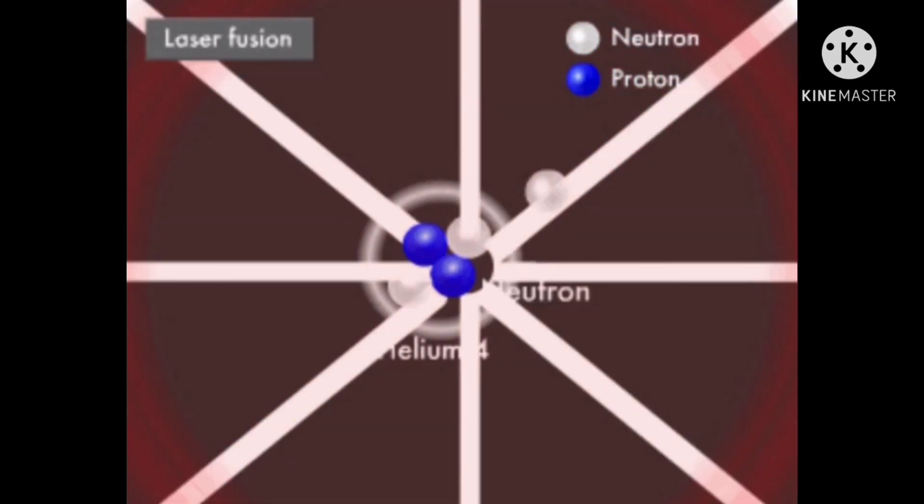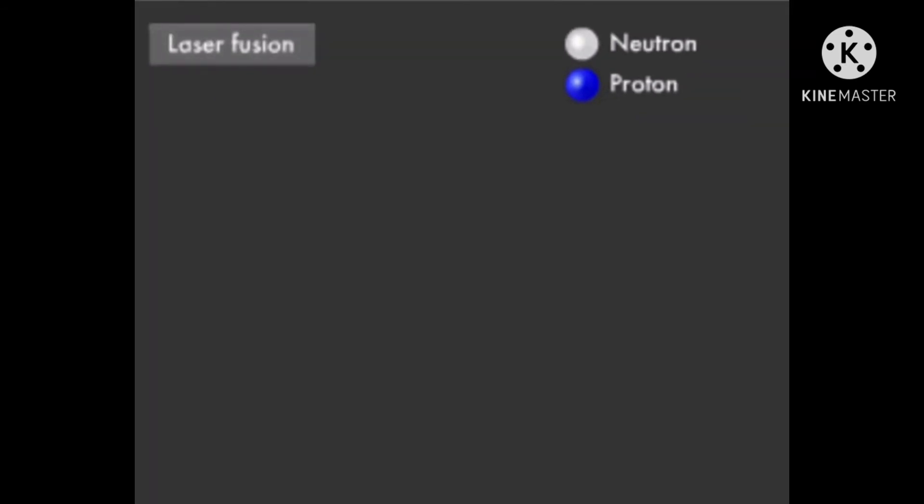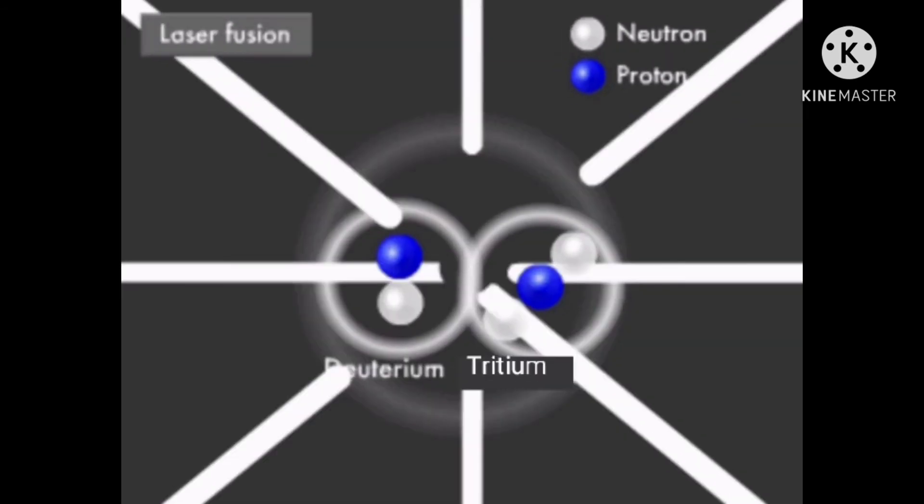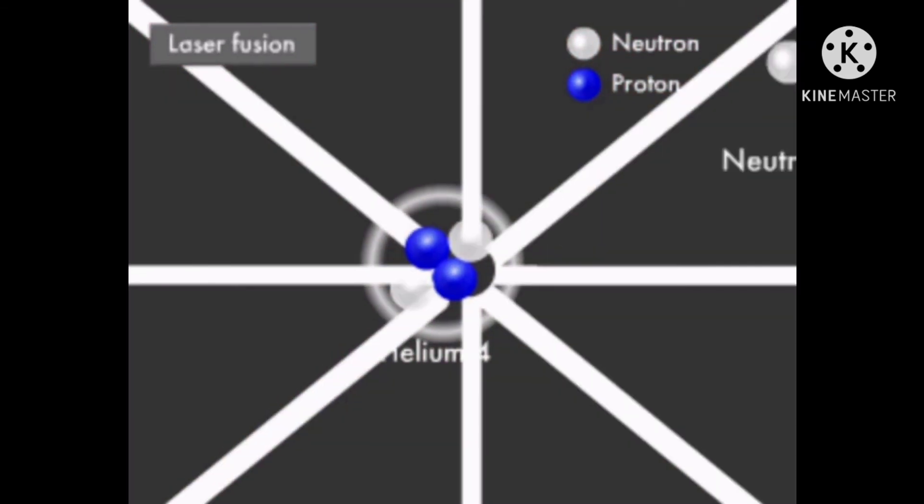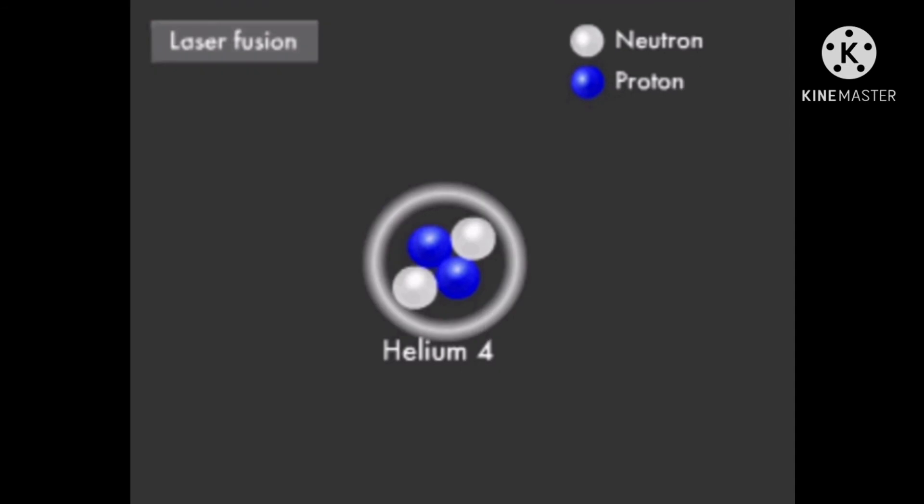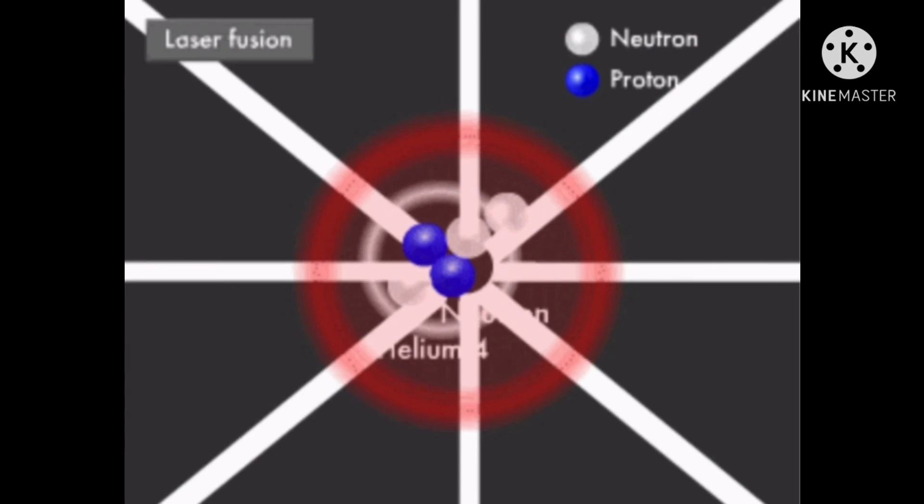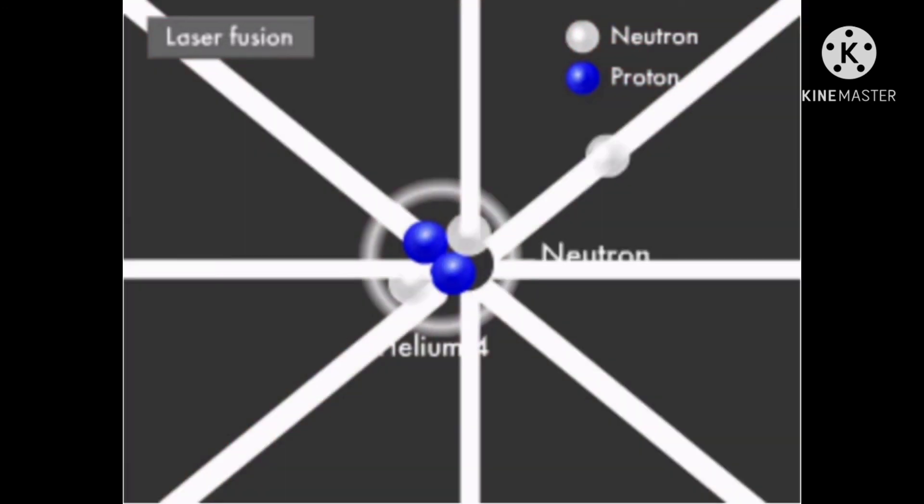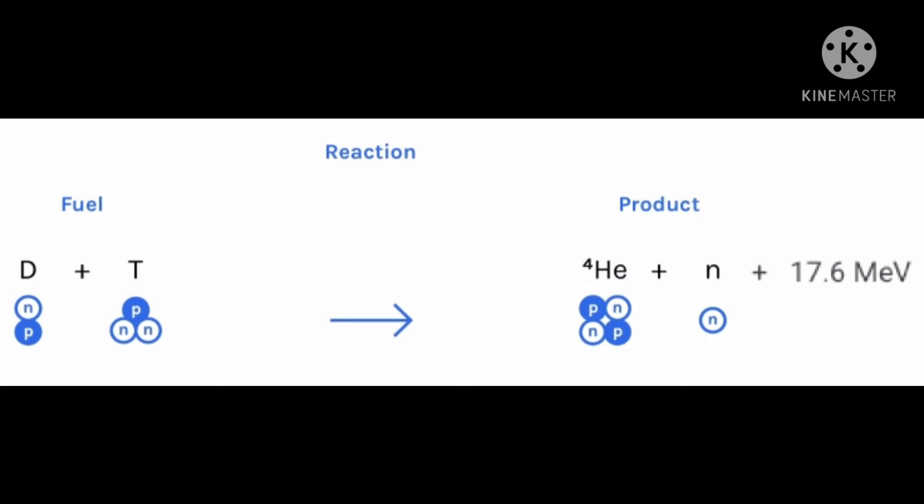As the surface of the target blasts away, the rocket-like reaction forces implode the target's interior to densities approximately 1000 times liquid density and temperature approximately 100 million degrees Celsius, sufficient to cause the nuclei to fuse, releasing a large amount of thermonuclear energy in accordance with the equation: deuterium plus tritium yields helium plus neutron plus 17.6 MeV.